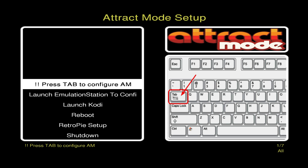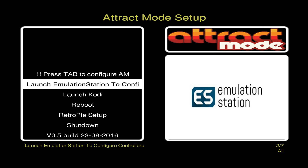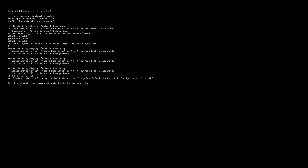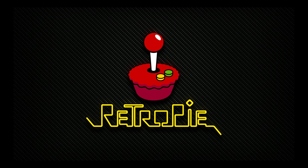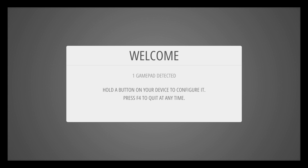Now that we have the image booted up, we need to launch Emulation Station. Use your keyboard for this. We're going to expand the file system and set up our controller, then go over updating RetroPie and updating Attract Mode. Attract Mode needs to be updated to have the really nice-looking system select menu — it only works with Attract Mode 2.2.0. Scroll down to 'Launch Emulation Station' and press enter. We need to expand the file system — press F4 on your keyboard and type: sudo raspi-config, then press enter.